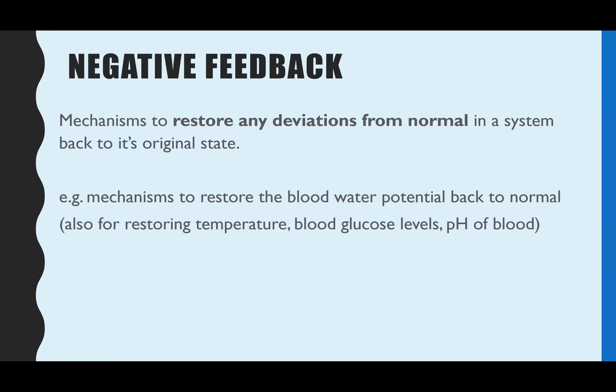Negative feedback is the mechanism to restore any deviation from normal in a system to return it back to its original state or back to the normal level. For example, if your temperature goes above 37 degrees C, which is normal, then mechanisms are put in place to bring your temperature back down to 37, the normal.